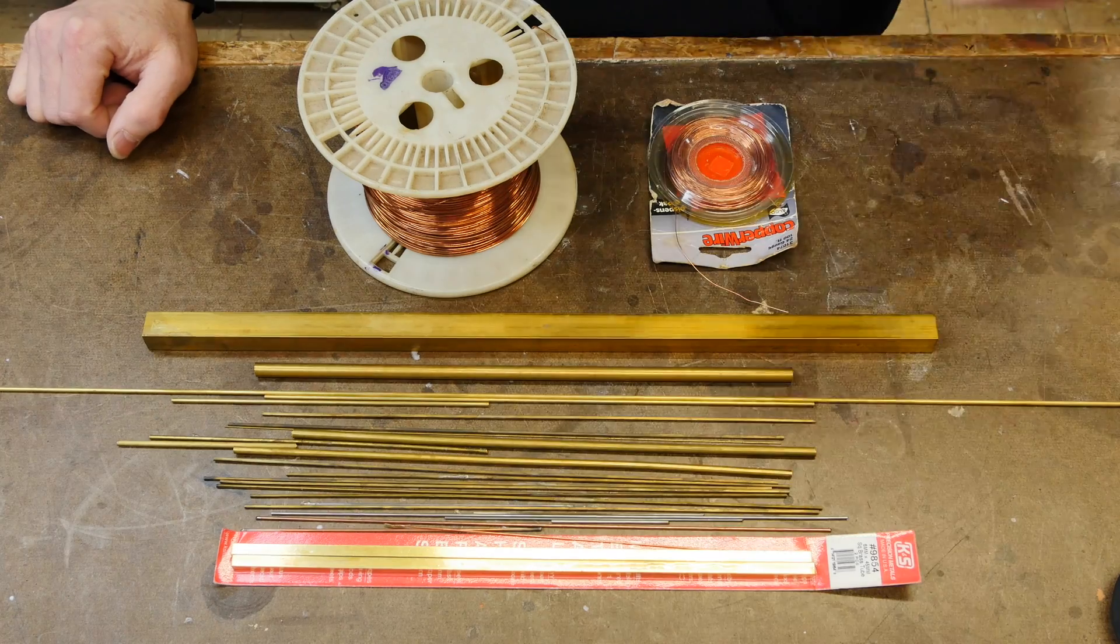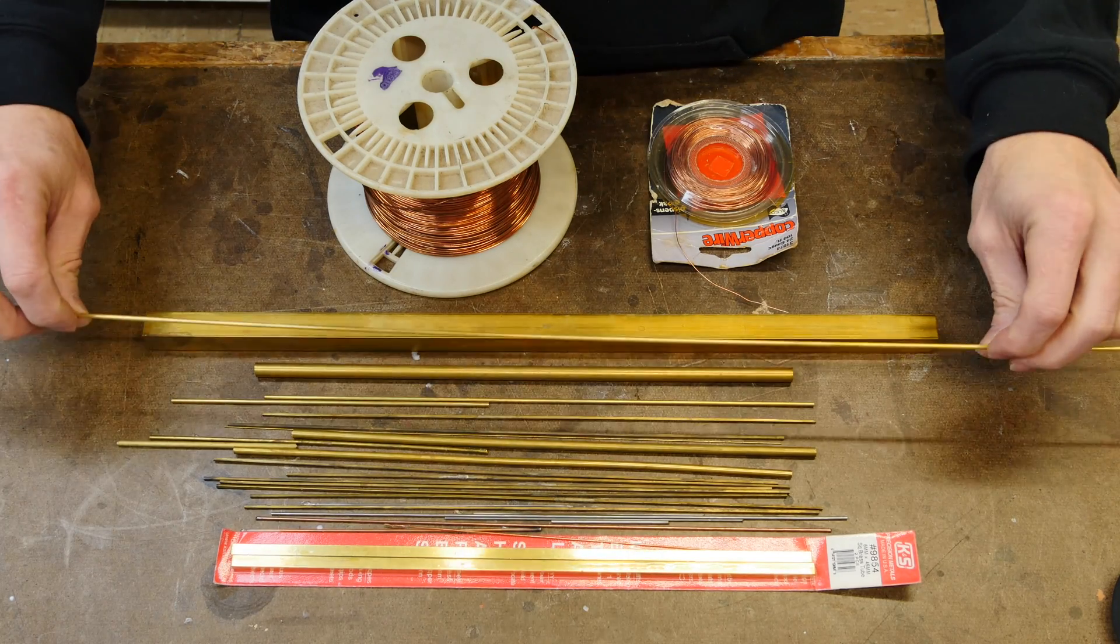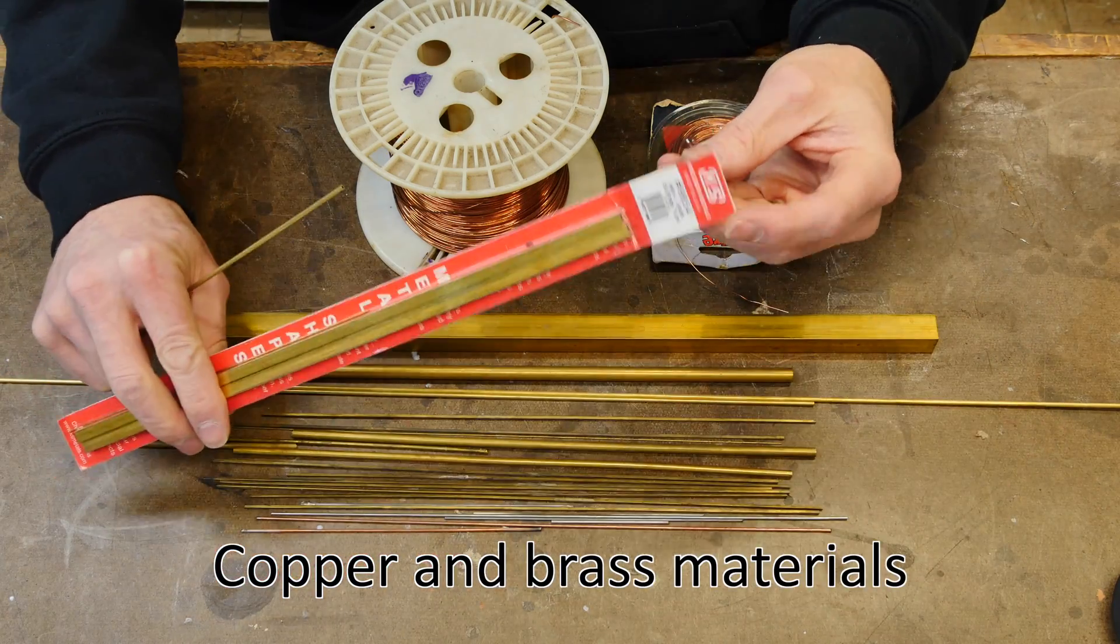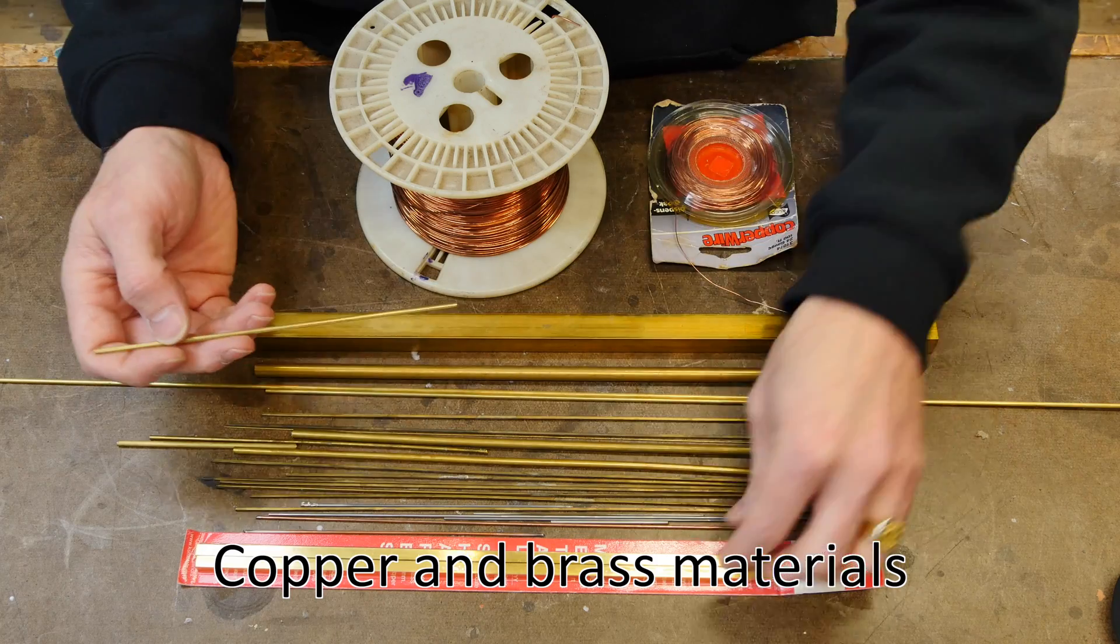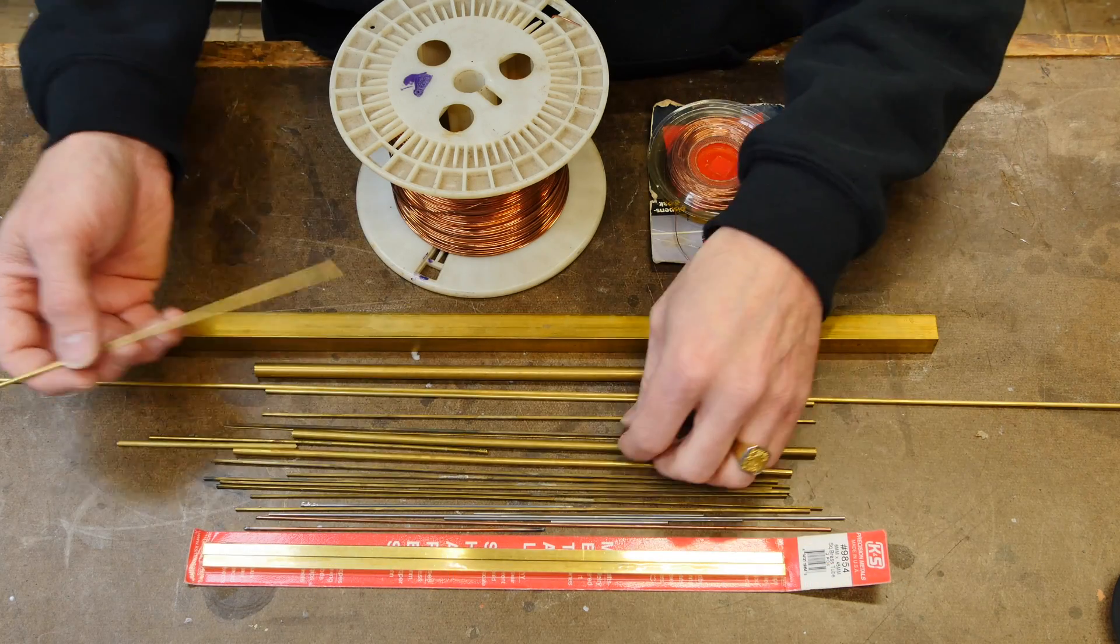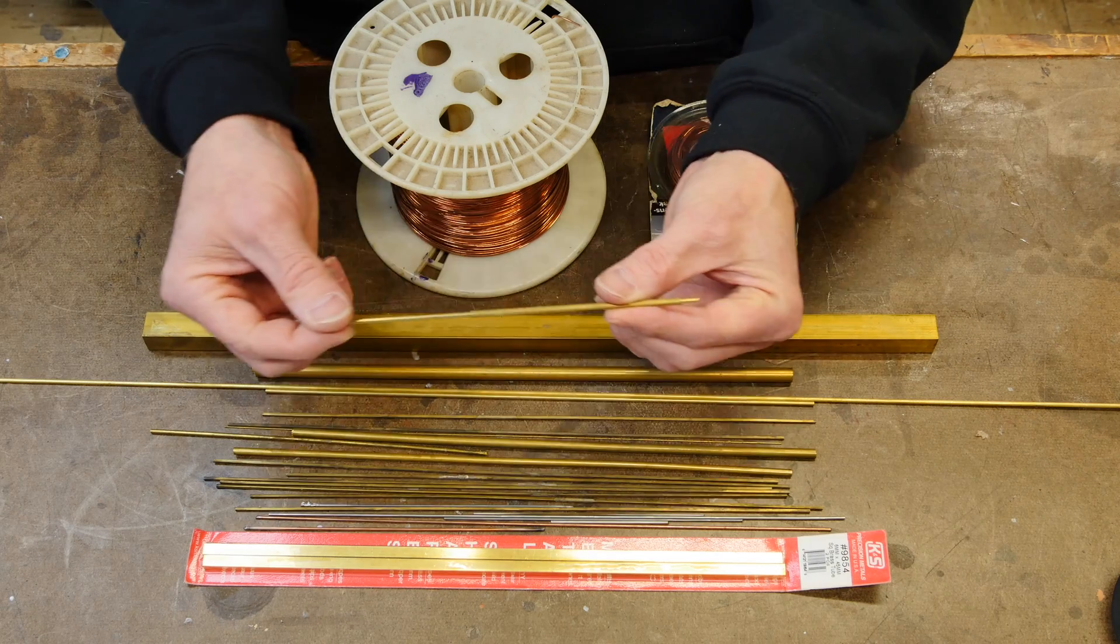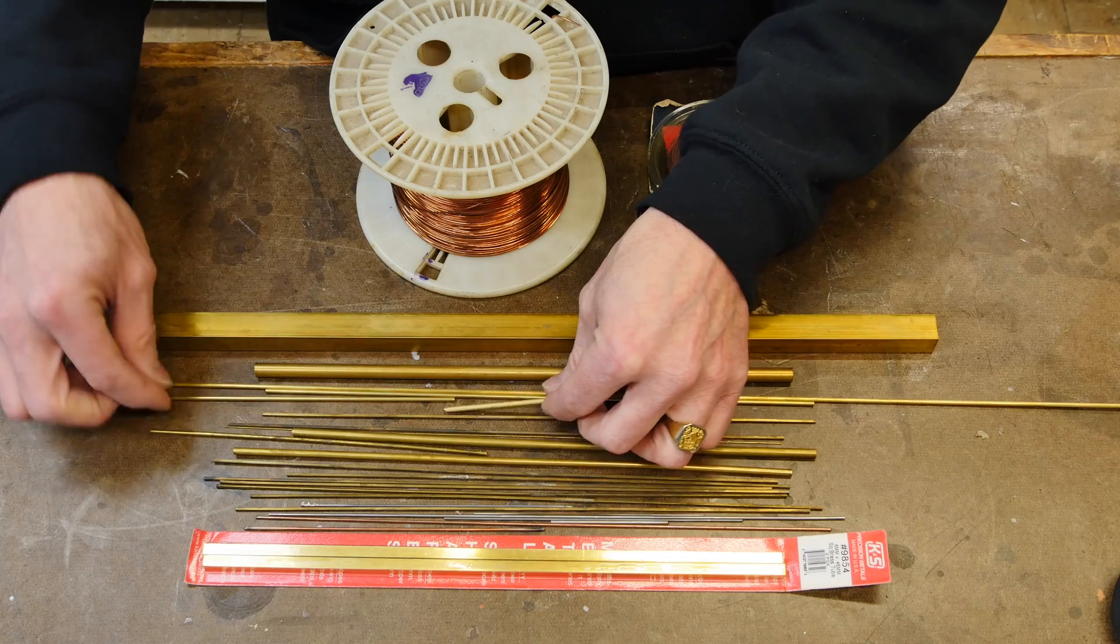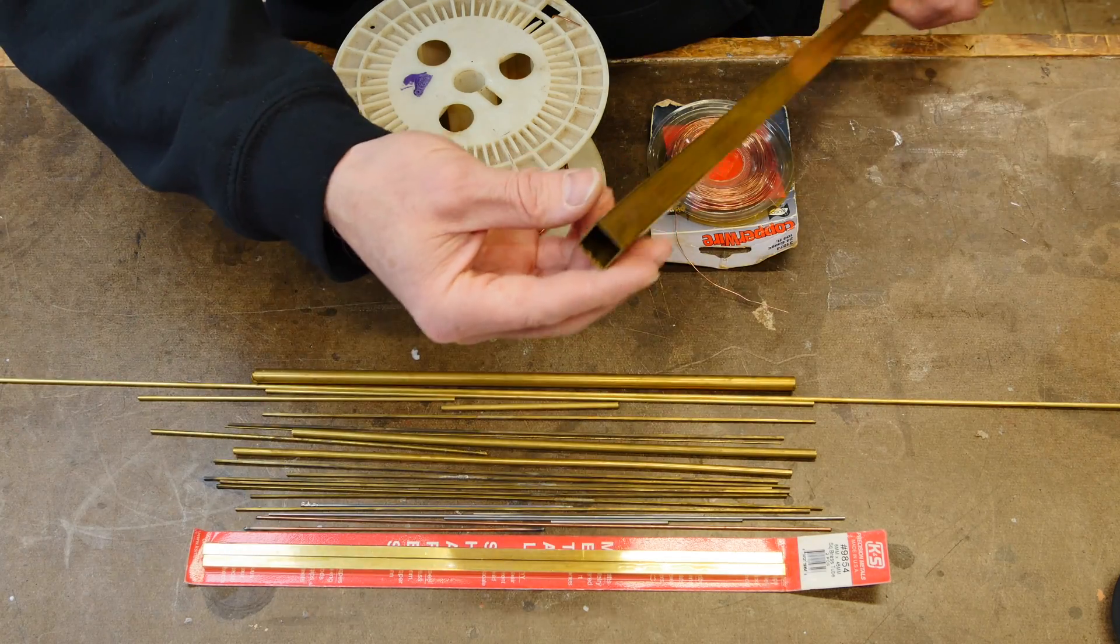All right, let's talk about materials. The majority of what I do I use brass and copper. The brass I buy from a company called KNS, it comes in packages like this and up to 36 inches long. It even comes in square sizes and all the pieces telescope so you can put them inside of each other, which comes in very handy, all the way up to thicknesses like this or even square like this.